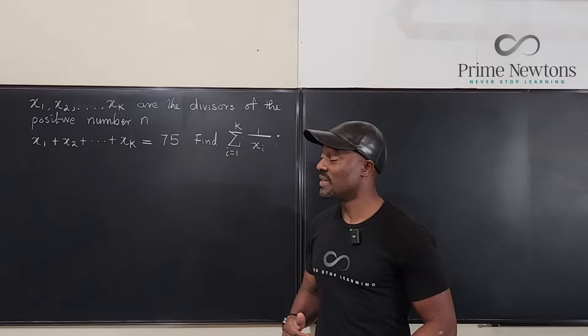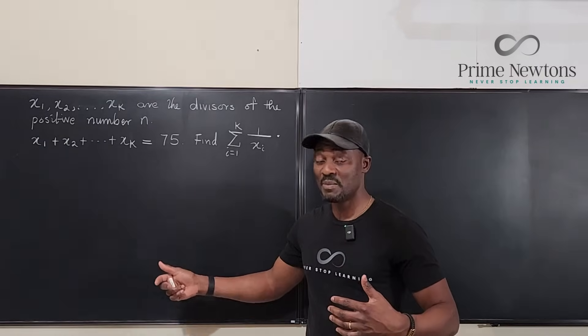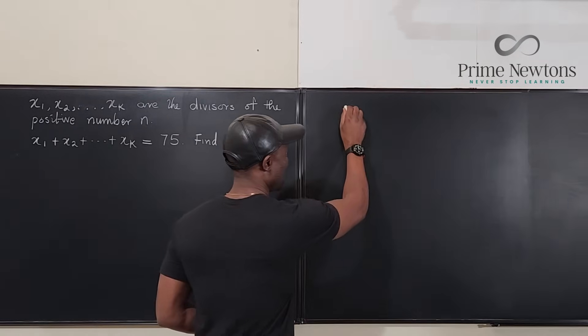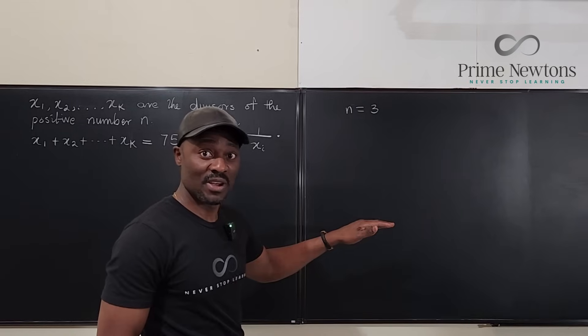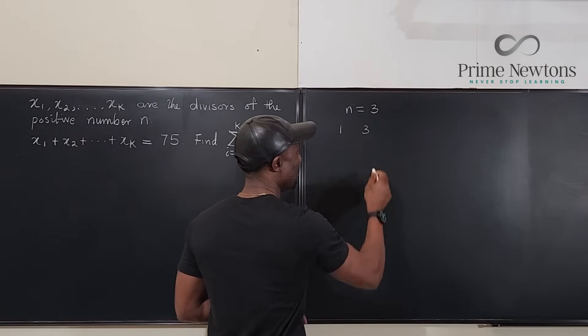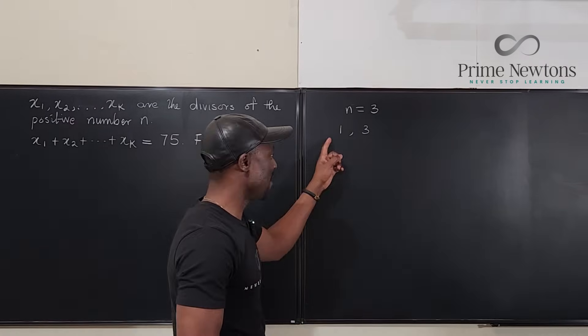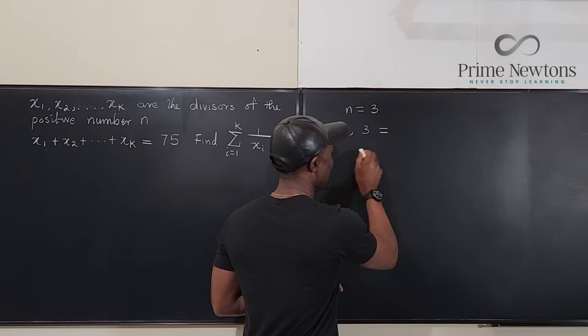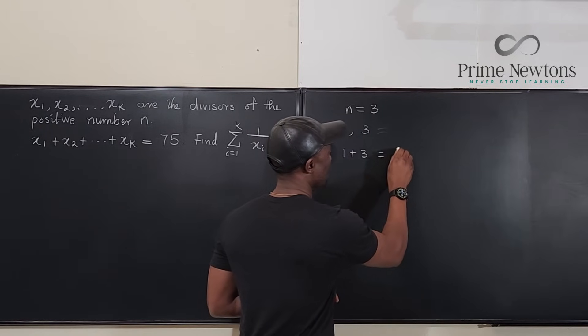Before I go into the technicalities of this problem, let me just take an example. Let's take the number 3. Let's say n equals 3. Then the divisors of 3 would be 1 and 3. That's it. Those are the divisors. Now, if you add up the divisors of 3, you're going to have 1 plus 3 equals 4.